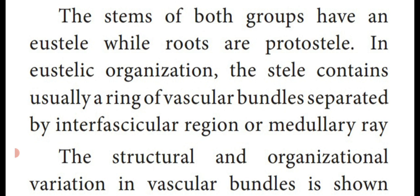The stems of both groups have a eustele, while roots have a protostele. Eustele means different vascular bundles present inside the endodermis, arranged in the form of a ring-like structure around the pith region at the center. That is called eustele, which is present in the stem. In the root, they show the protostele, meaning xylem plates alternate with phloem plates in a radial arrangement. That condition is called protostele.